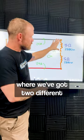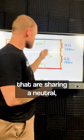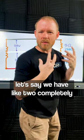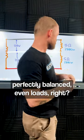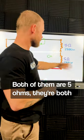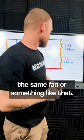In a situation where we've got two different 120-volt circuits that are sharing a neutral, let's say we have two completely perfectly balanced even loads. Both of them are five ohms. They're both the same fan or something like that.